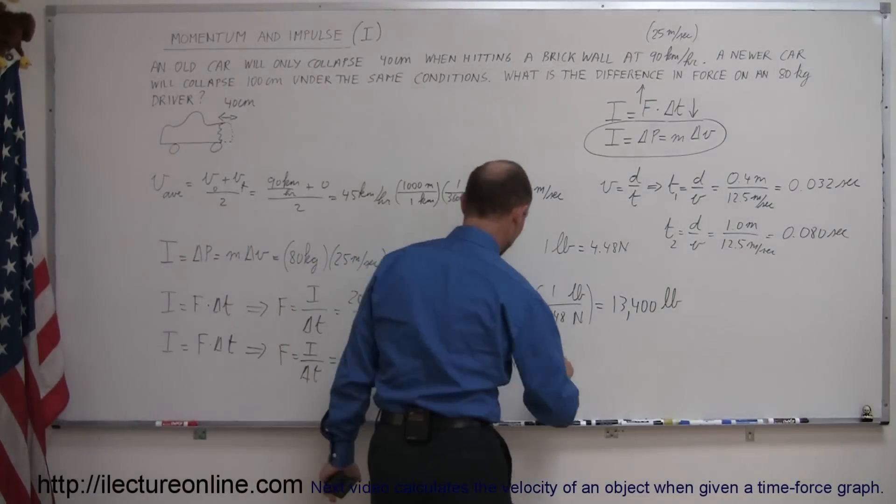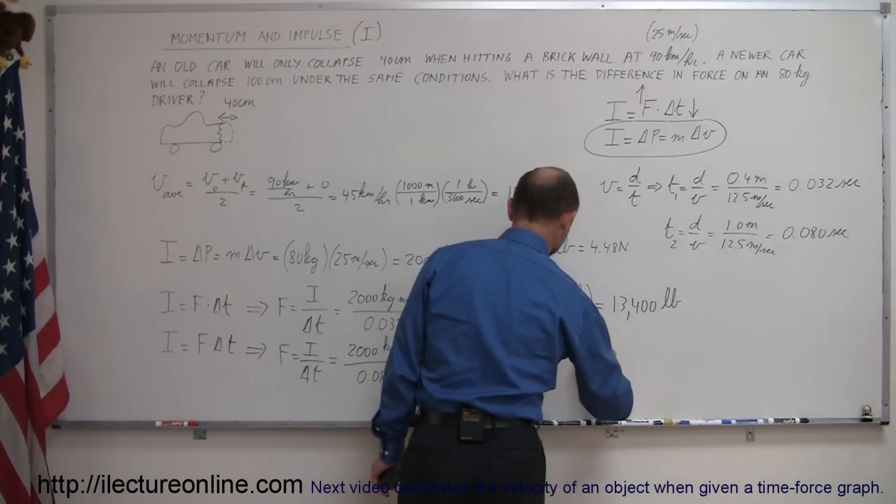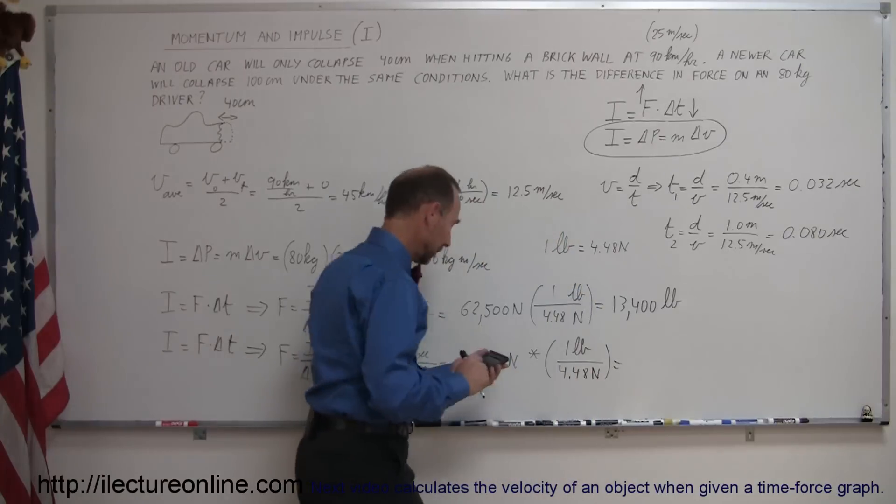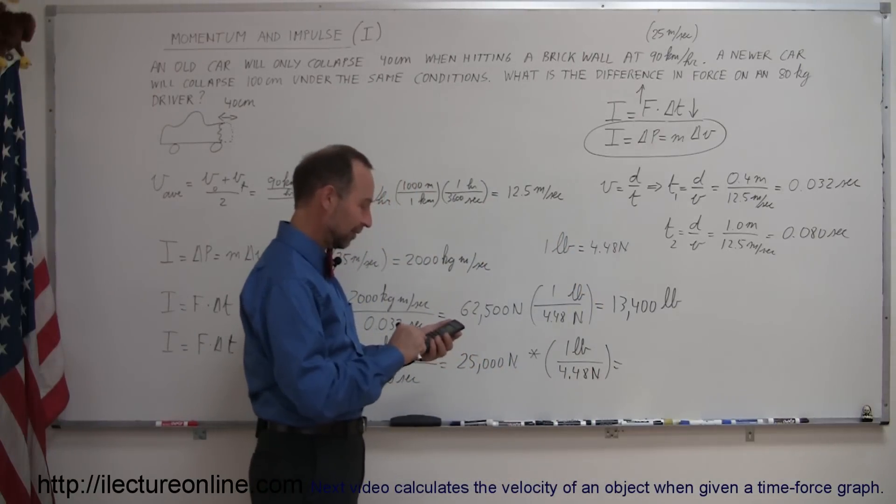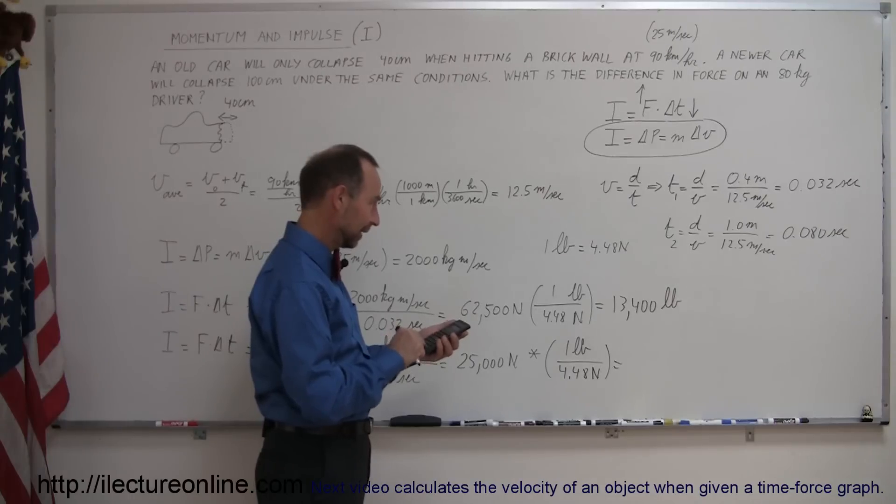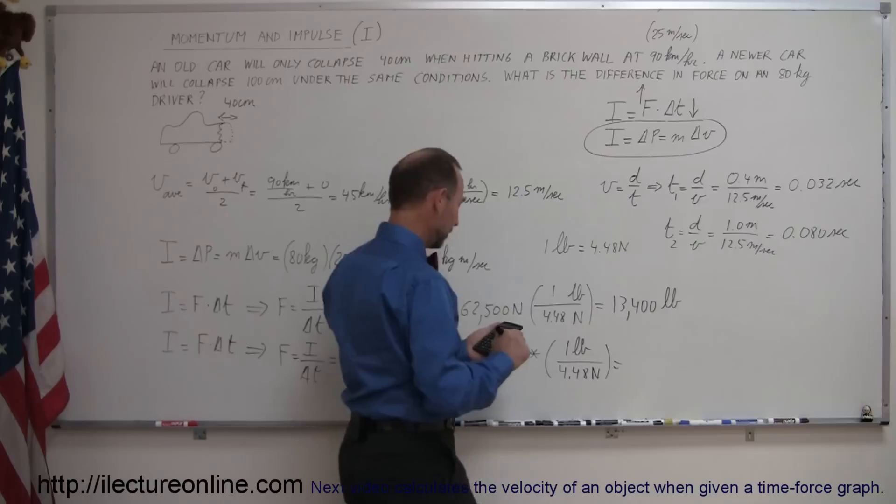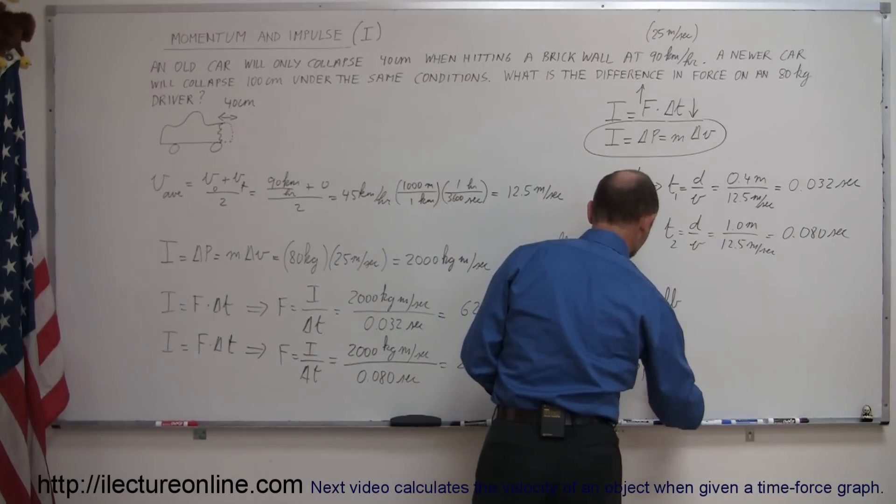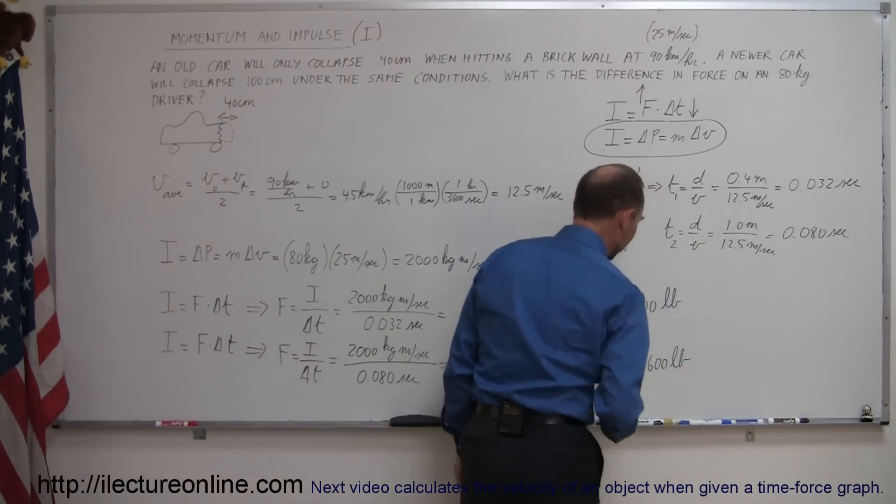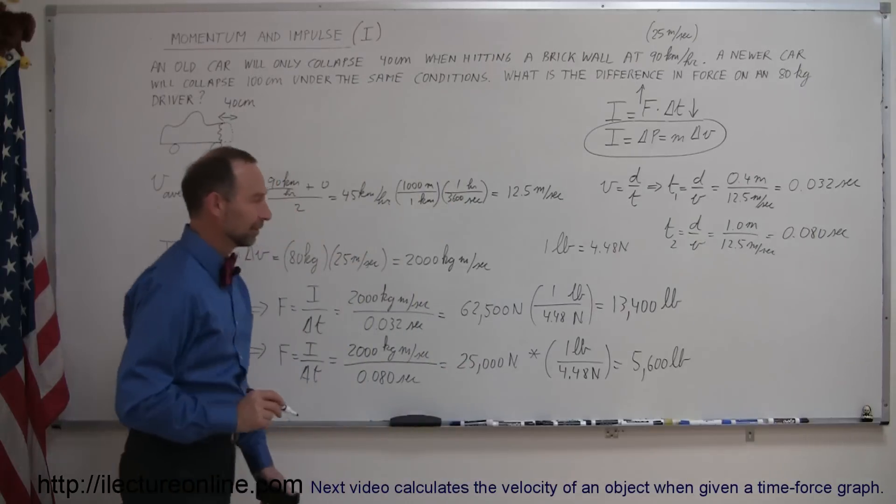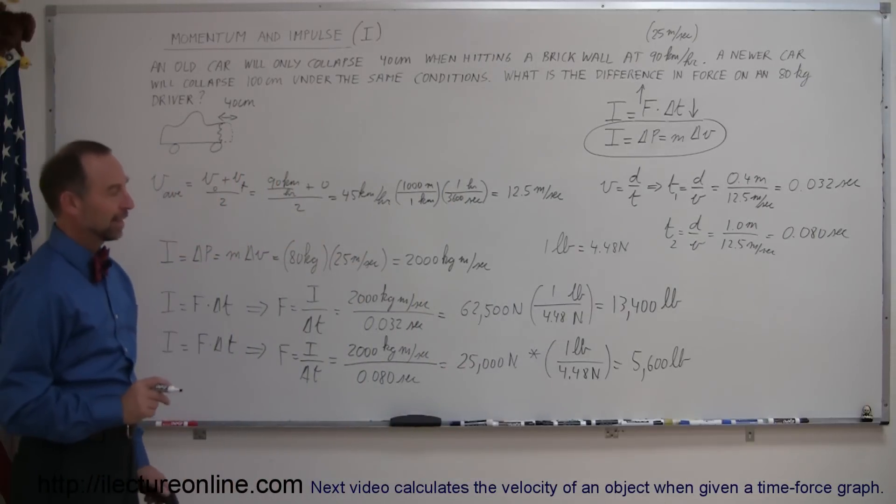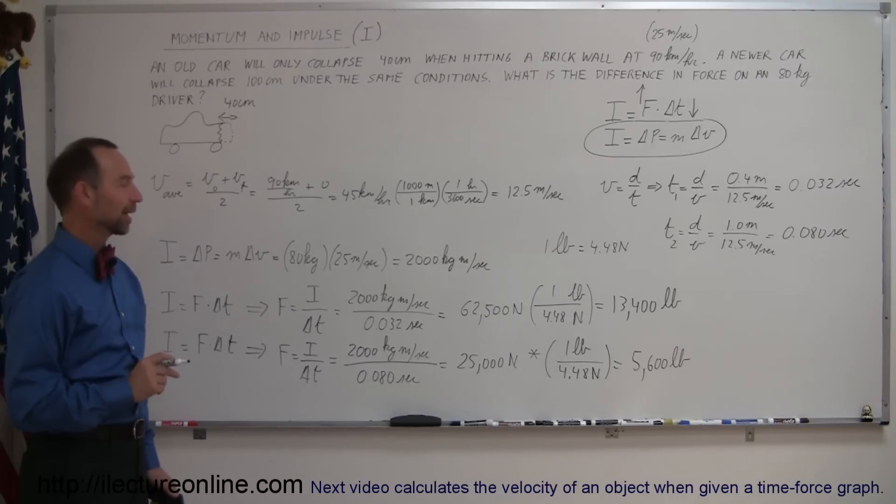But if it's only 25,000 newtons, we get 25,000 divided by 4.48, which equals about 5,600 pounds.